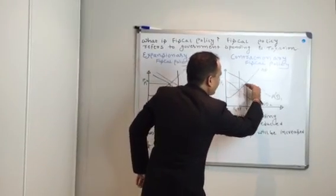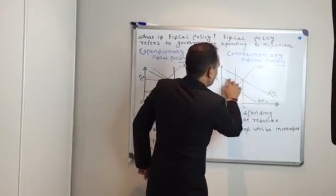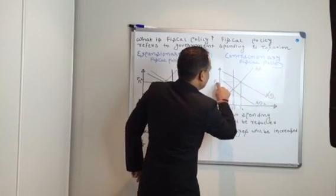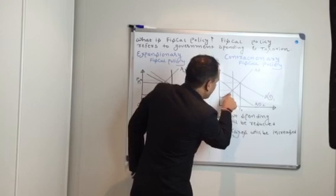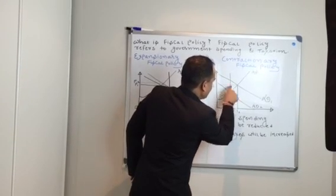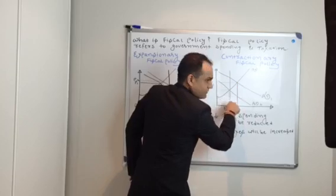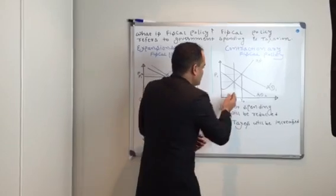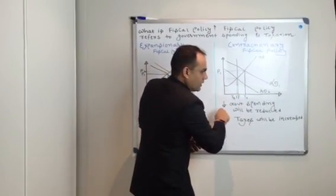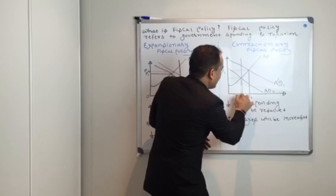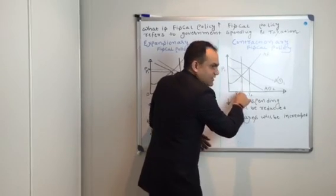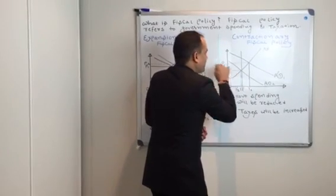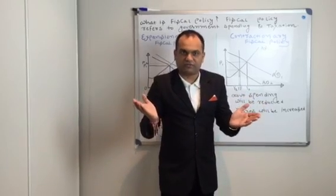These two tools — reducing spending and raising taxes — will shift your aggregate demand curve to its left. This is your original AD curve, this is your AS curve, this is the original price level, and this is your original GDP. The government wants to reach YF — full employment — but as we know, you never get 100% spot on. After resorting to these two measures, instead of landing at the full employment point, the economy lands further back. The GDP decreases substantially and the decreased GDP brings the price level down as well. This was your contractionary fiscal policy.